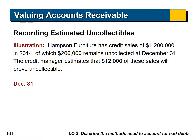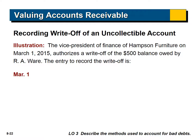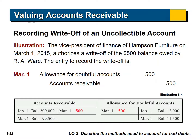Here's another illustration of uncollectibles. Hampson Furniture has credit sales of $1.2 million, of which $200,000 remains uncollected at December 31st. The credit manager estimates $12,000 will prove uncollectable. We set up an adjusting entry at year end to record those estimated uncollectibles. On March 1st of the next year, the vice president authorizes a write-off of a $500 balance owed by R.A. Ware. This company owes us money, they don't pay, and we write it off — we reduce the allowance, which was set up for the purpose of writing off bad debts subsequent to the sale.